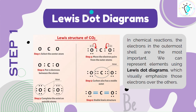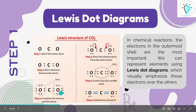Lewis dot diagrams show visually how we emphasize electrons — specifically, electrons in the outermost shell and how they are arranged for a particular molecule. For example, let us take carbon dioxide. First, we will select the central atom, which is carbon, and then we put two electrons between both atoms — two electrons on each side.